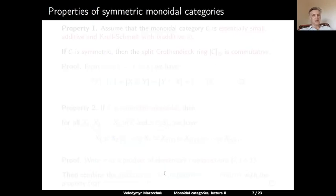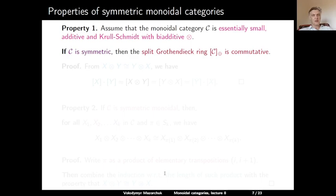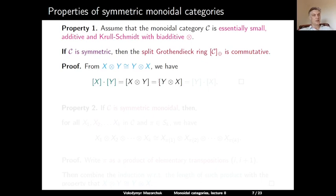Here are some basic properties of symmetric monoidal categories. Property one: assume the monoidal category C is essentially small, additive, and Krull-Schmidt with bi-additive tensor product — the setup for talking about the Grothendieck ring. If C is symmetric, then the split Grothendieck ring of C is commutative. Proof: since X tensor Y is isomorphic to Y tensor X, the class of X tensor Y equals the class of Y tensor X, so the product [X][Y] = [Y][X]. This completes the proof.